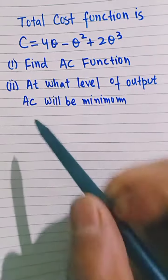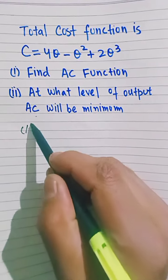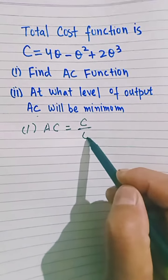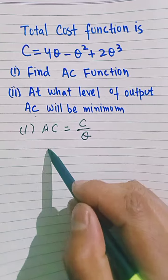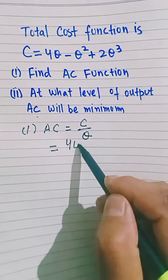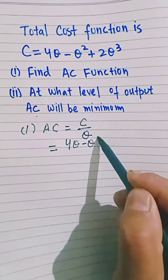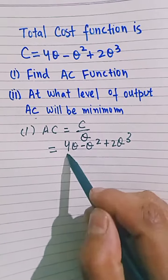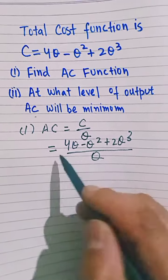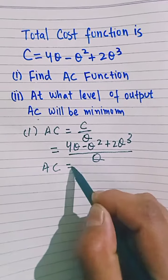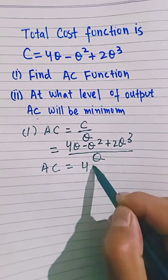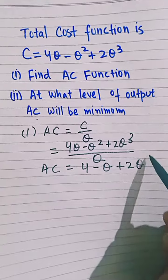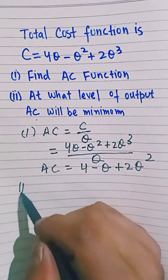Coming to the first part: the average cost is simply equal to total cost divided by output. The cost function is given as 4Q - Q² + 2Q³. Dividing by Q, the average cost will be equal to 4 - Q + 2Q². This is our average cost function.